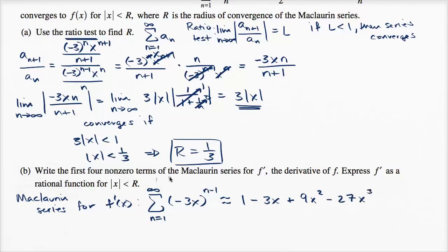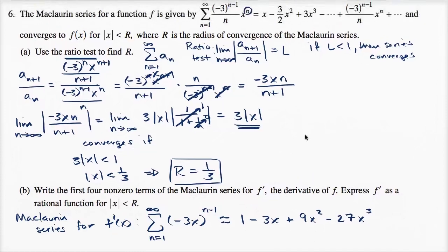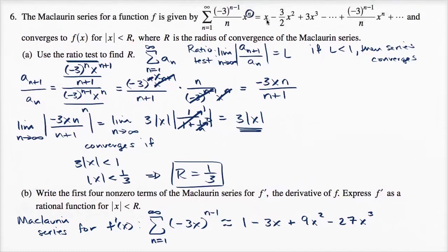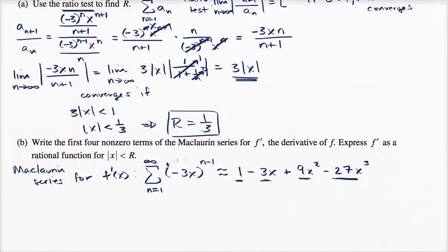So there you have it — that's the first four non-zero terms of the Maclaurin series. You could have also taken the derivative term-by-term directly from f: derivative of x is one, derivative of negative three-halves x squared is negative three x, and so on. So we've done the first part — the first four non-zero terms of the Maclaurin series for f prime. Now they say express f prime as a rational function for the absolute value of x less than r.